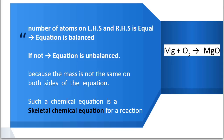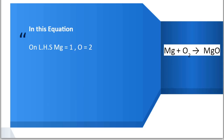This is a skeletal chemical equation for the burning of magnesium in air. In this equation, let us see how many atoms are on the left-hand side and the right-hand side. On the left-hand side, Mg equals 1 and O equals 2 — that is, 1 atom for magnesium and 2 atoms for oxygen.